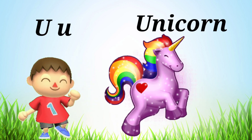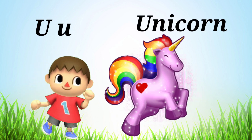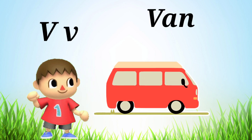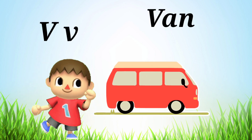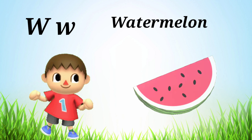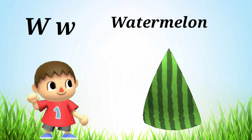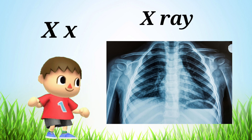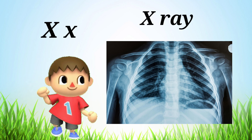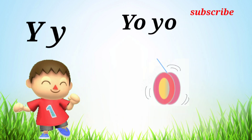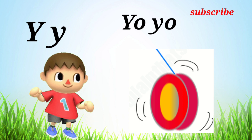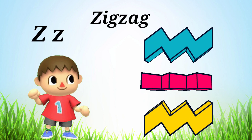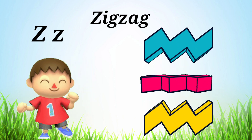U for Unicorn, V for Fan, W for Ottermelon, X for X-Ray, Y for Yo-Yo, Z for Zig-Zag. Thank You.